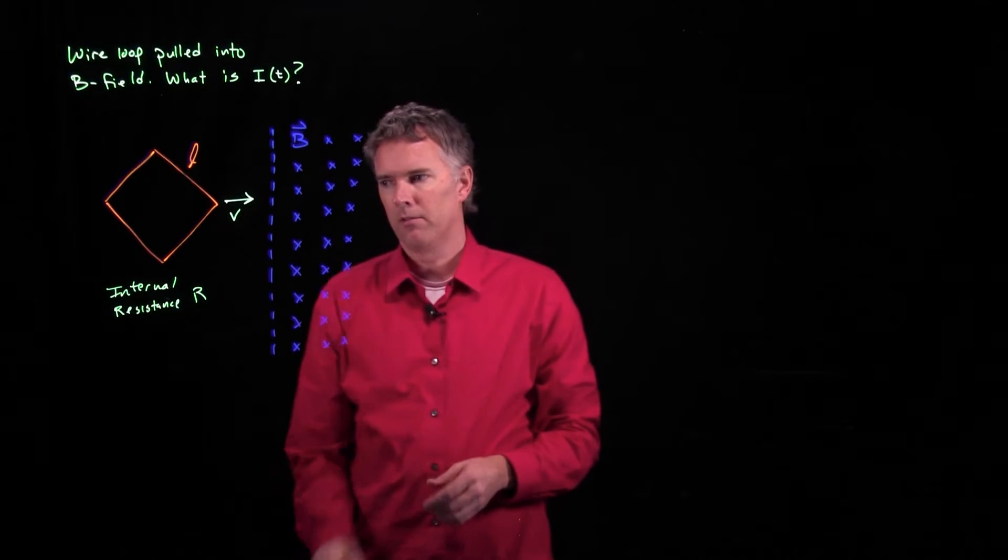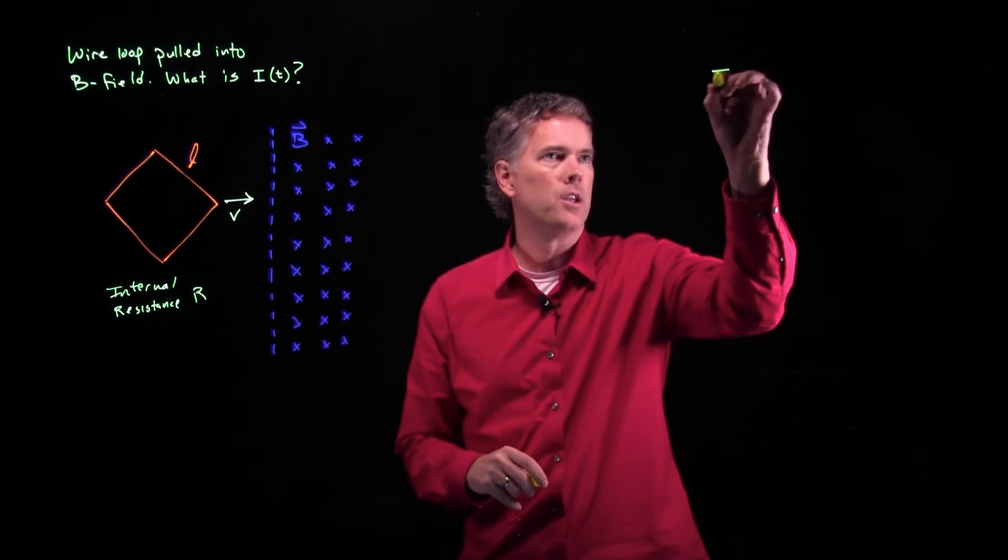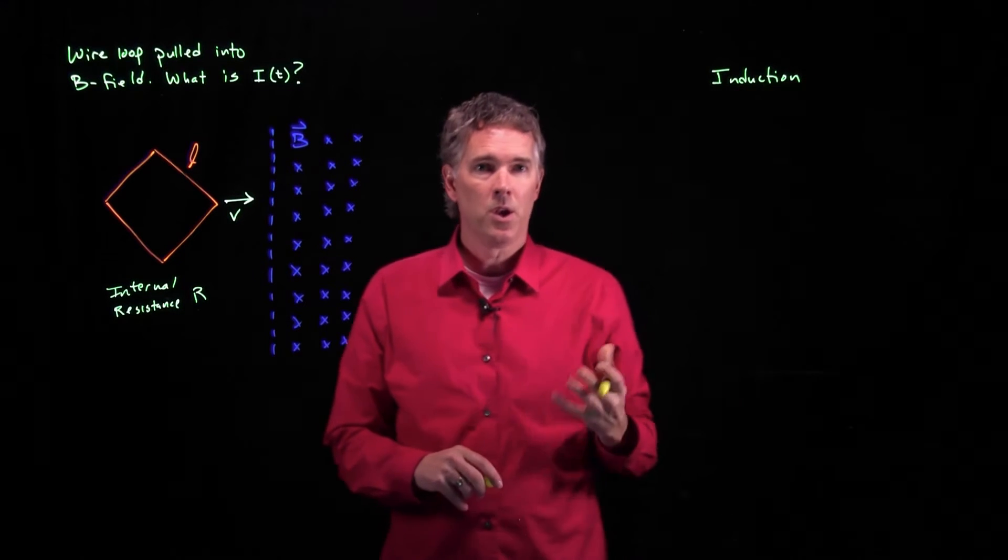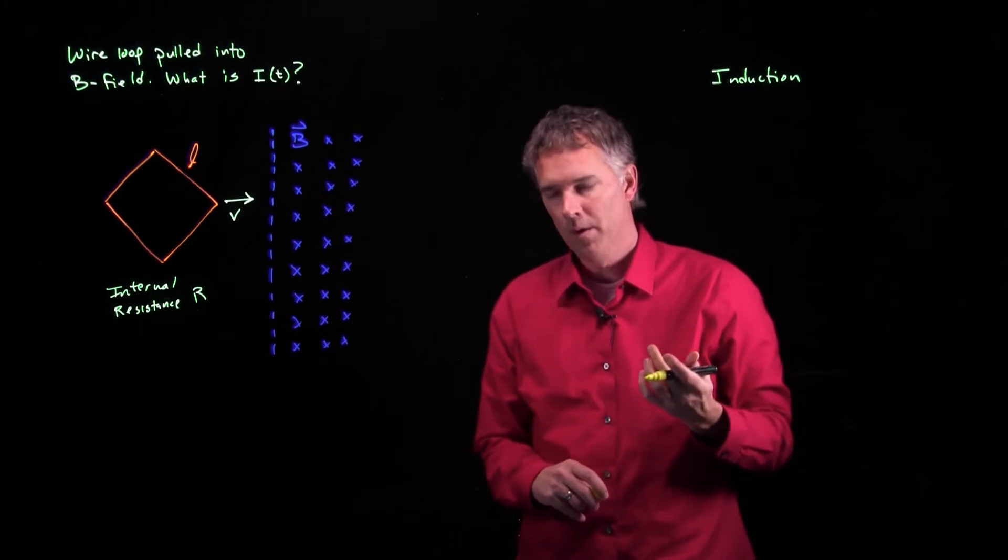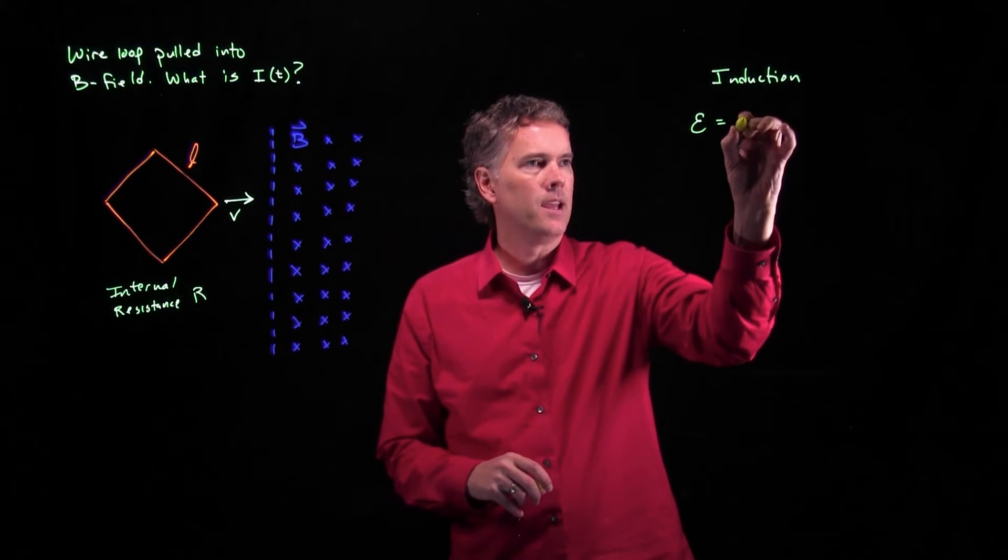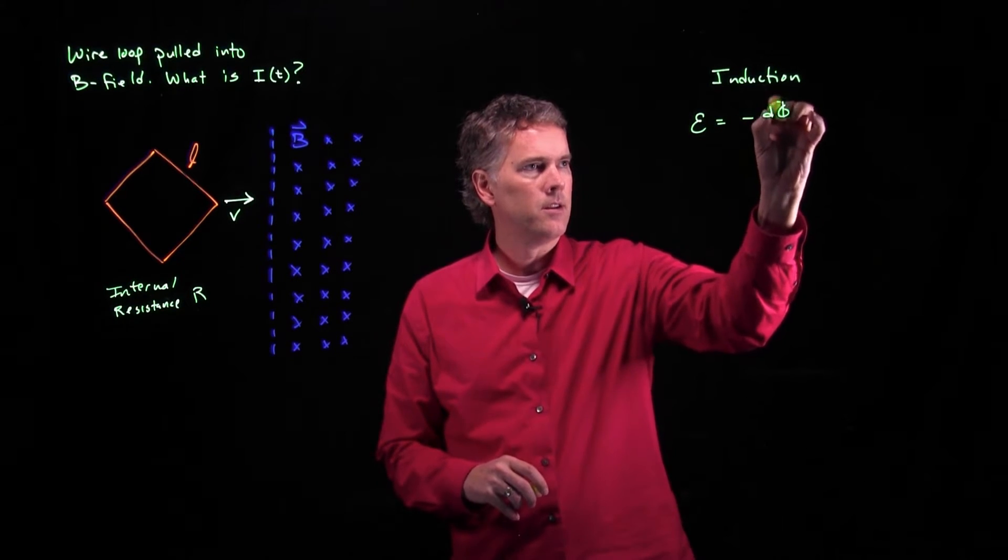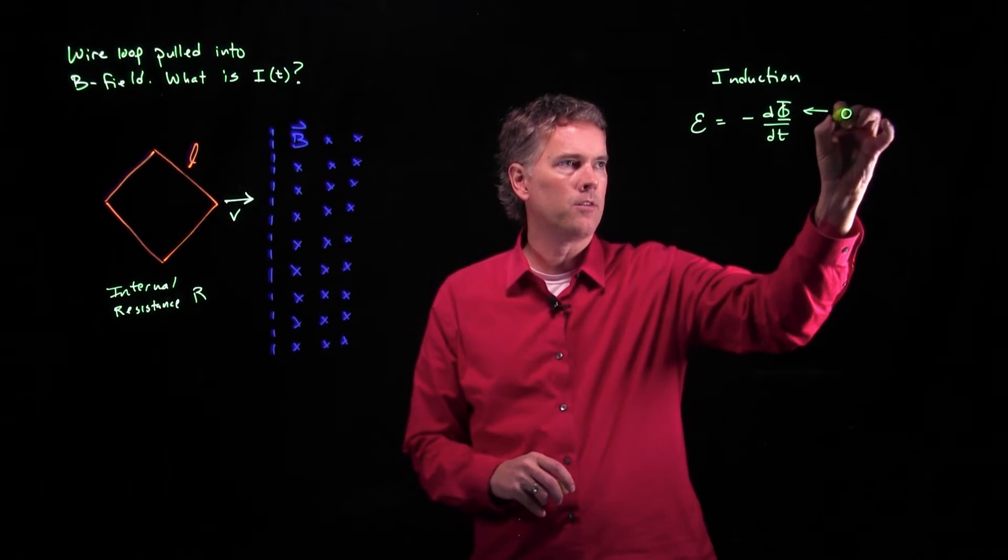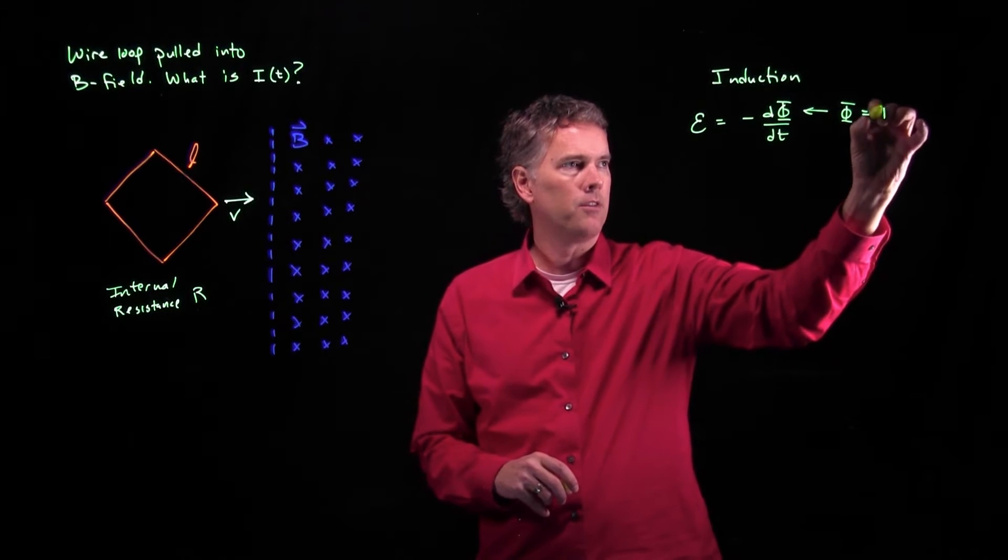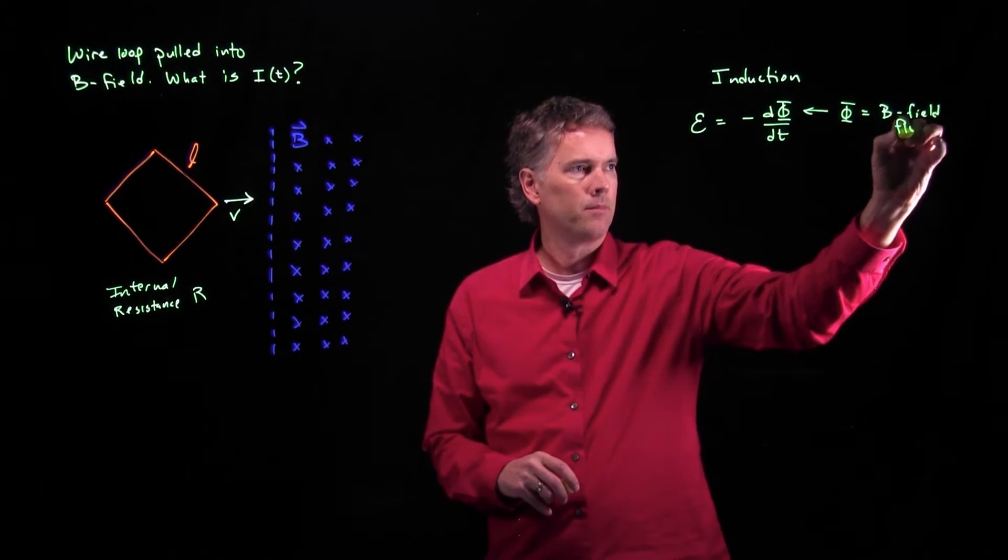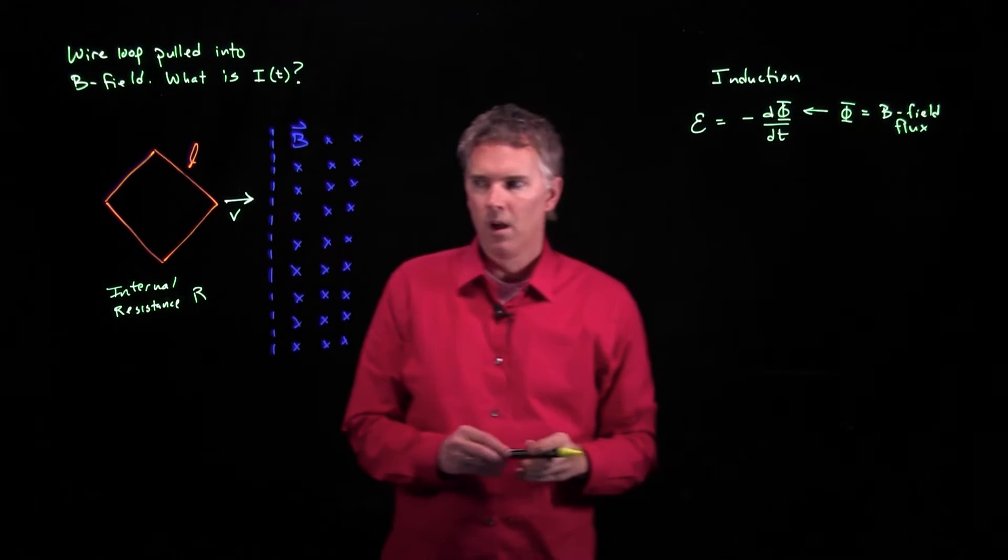Alright, so how do we think about this? Well this is of course induction. And what do we know about induction? What we know is that the EMF epsilon is negative d phi dt, where this thing phi is the flux. It's the B field flux.